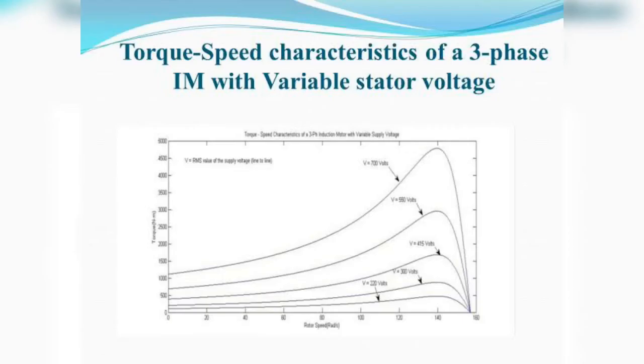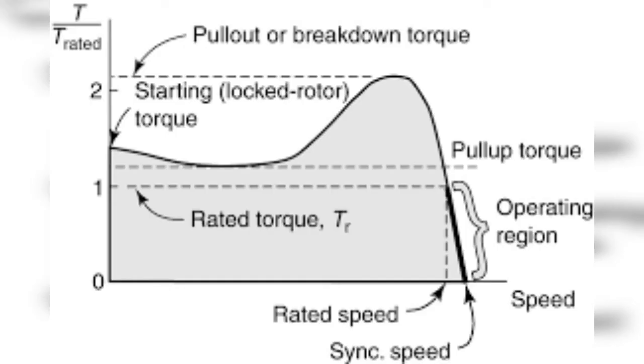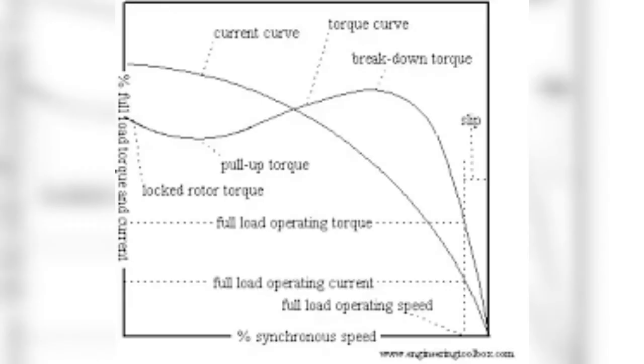What determines the torque of an electric motor? The speed of an electric motor, output power, and torque. The driving force of an electric motor is torque, not horsepower. Torque is a twisting force that makes the motor run, and torque is active from 0% to 100% of operating speed.